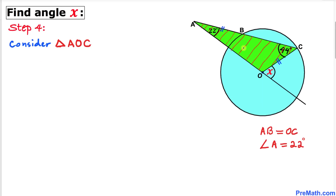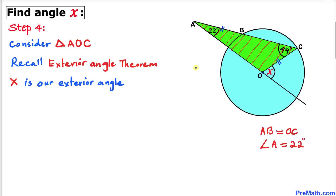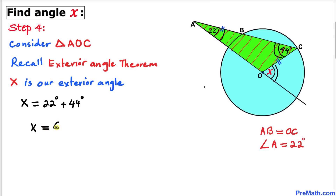For the final step, let's consider the big triangle AOC and apply the exterior angle theorem once again. Angle X is the exterior angle, so it equals the sum of the two opposite interior angles: 22 degrees and 44 degrees. Therefore, X equals 22 degrees plus 44 degrees, giving us X equals 66 degrees — and that's our answer.